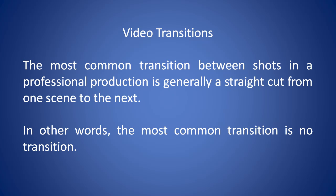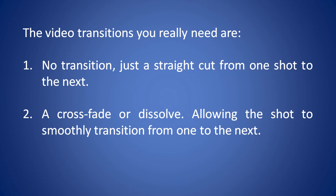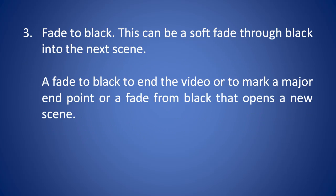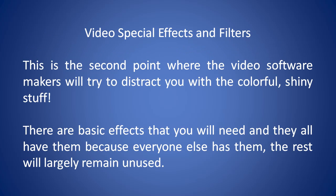Video transitions: the most common transition between shots in a professional production is a straight cut from one scene to the next — in other words, no transition at all. The purpose of a video is so people can watch the content, not a bunch of twisting, spinning, and flipping images between every shot. The video transitions you really need are: a straight cut, a crossfade or dissolve, and a fade to black. All good software on the market has more transitions than you'll ever need, so this point can be ignored completely.